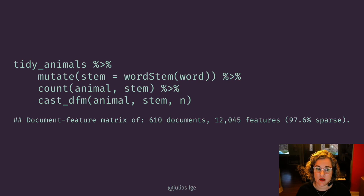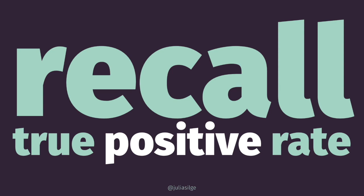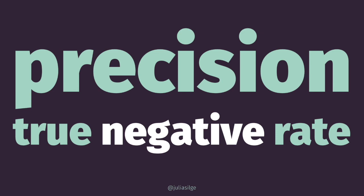Common sense says that reducing the number of features in our dataset is going to improve the performance of any machine learning model, assuming we haven't lost any important information by stemming. Stemming can be helpful in some contexts, but typical stemming algorithms are somewhat aggressive and have been built to favor sensitivity — the recall or true positive rate — at the expense of specificity — the precision or true negative rate. In a supervised machine learning context, this affects a model's positive predictive value. Stemming can increase a model's ability to find positive examples, but if the text is over-stemmed, the resulting model loses its ability to correctly label negative examples.